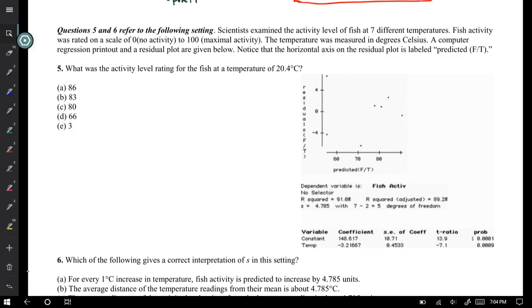Scientists examined the activity level of fish at seven different temperatures. Fish activity was rated on a scale of 0 (no activity) to 100 (maximal activity). The temperature was measured in degrees Celsius. A computer regression printout and residual plot are given below. Notice the horizontal axis on the residual plot is labeled predicted fish/temperature.